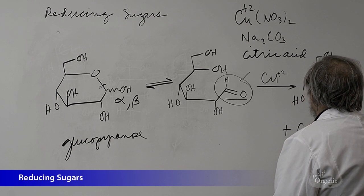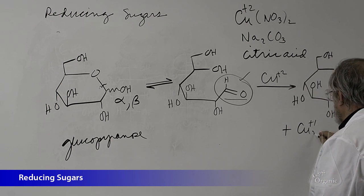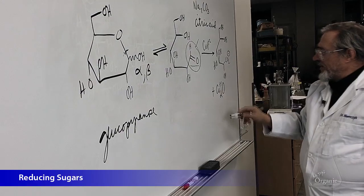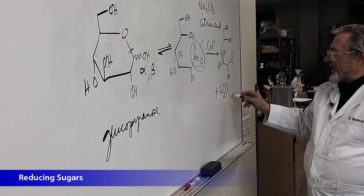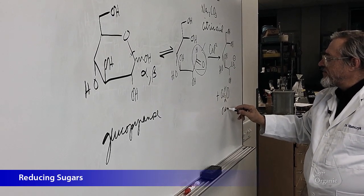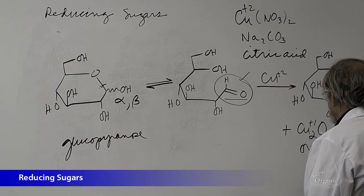What you also form is a plus 1 oxidation state for copper, and this reacting with water gives you this material, copper oxide, which is an orange-brown precipitate.